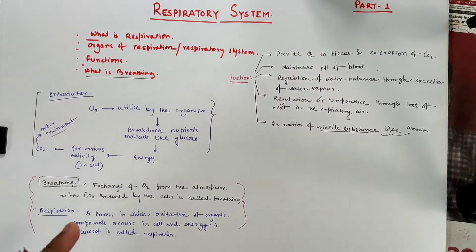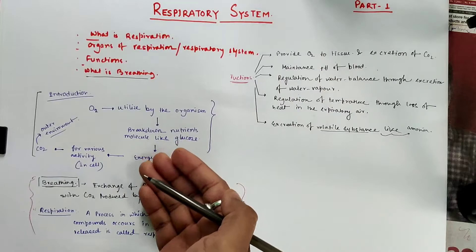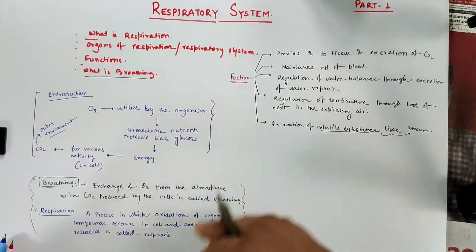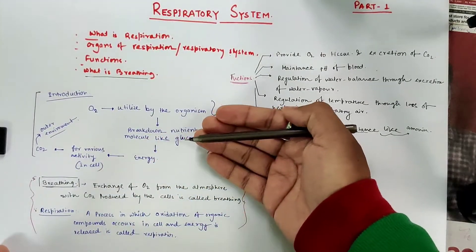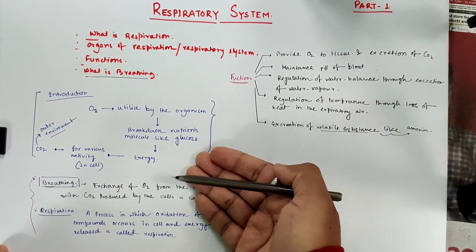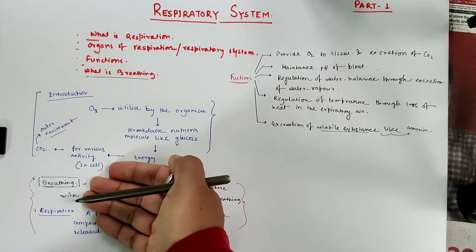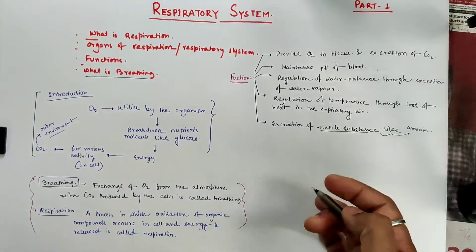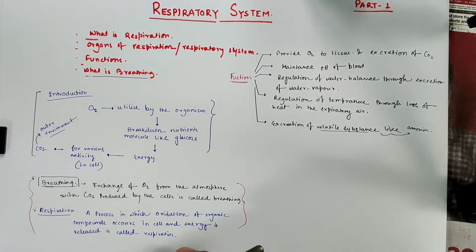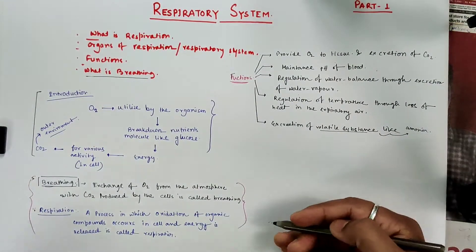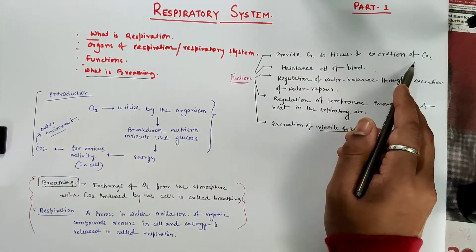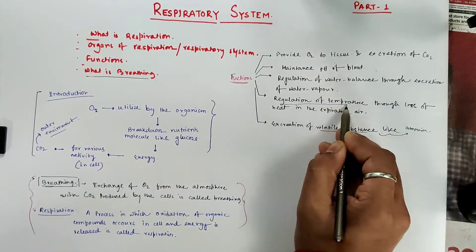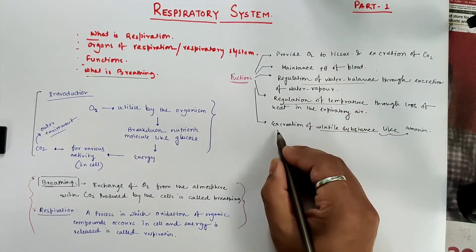Recap: what is breathing, what is respiration, and respiration functions. O2 is utilized by organisms; nutrients like glucose produce energy through oxidation of organic compounds occurring in the cell. Functions: provide O2 to tissue, remove CO2, maintain pH of blood, regulate water balance, excretion of volatile substances.